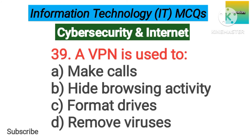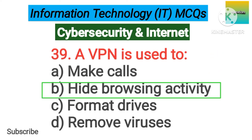Number 39. A VPN is used to option A: Make calls. B: Hide browsing activity. C: Format drives. D: Remove viruses. The correct answer is option B, hide browsing activity.